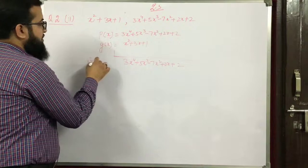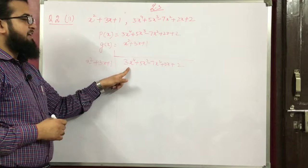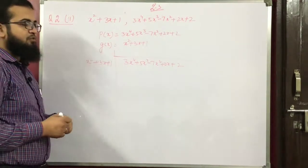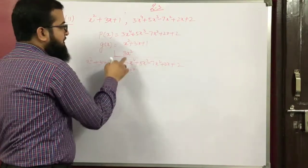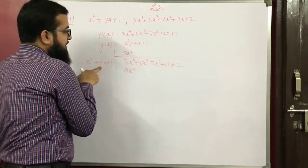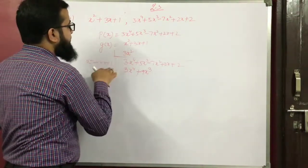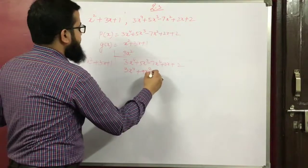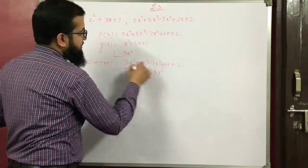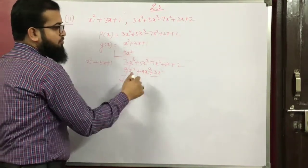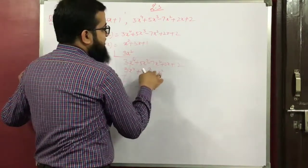To get 3x⁴, multiply g(x) by 3x². So 3x² times x² is 3x⁴, 3x² times 3x is plus 9x³, and 3x² times 1 is plus 3x². After subtracting, we have minus 10x² plus 2x plus 2.